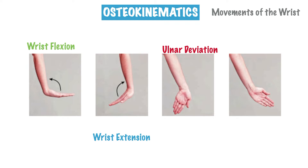In the last image, the movement is referred to as radial deviation. As you may have guessed, it's movement of your wrist to the side, but this time towards your thumb, which is also in the direction of the radius bone in your forearm.